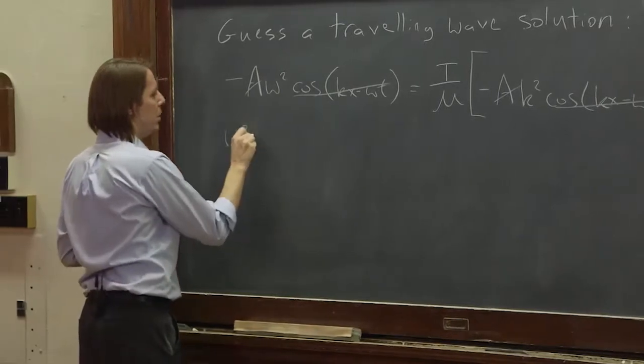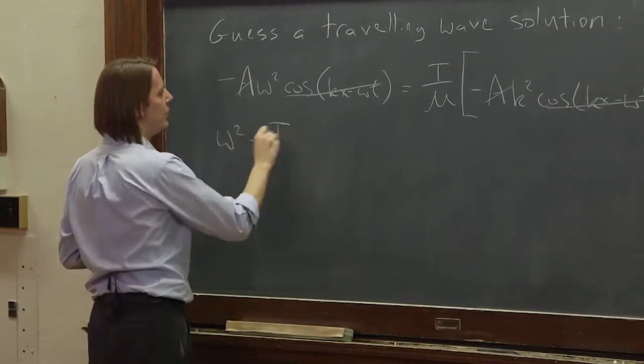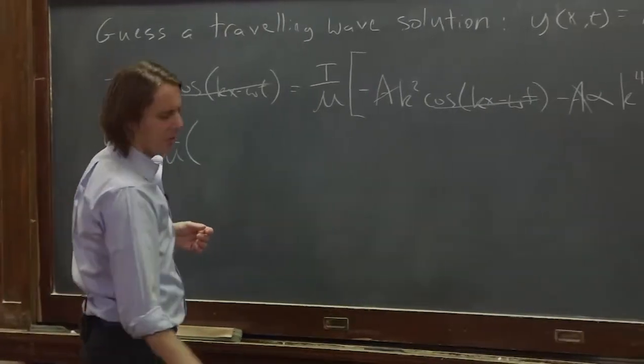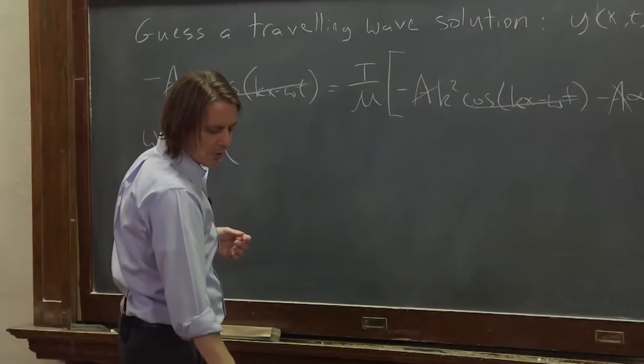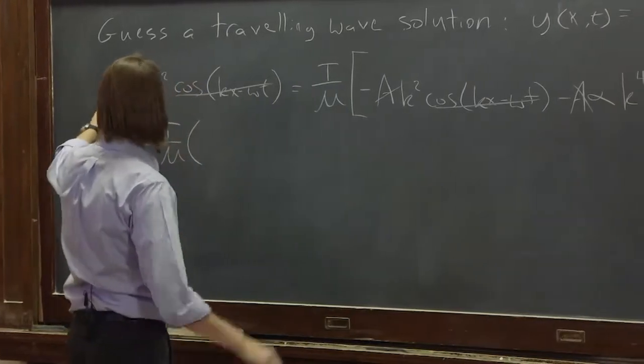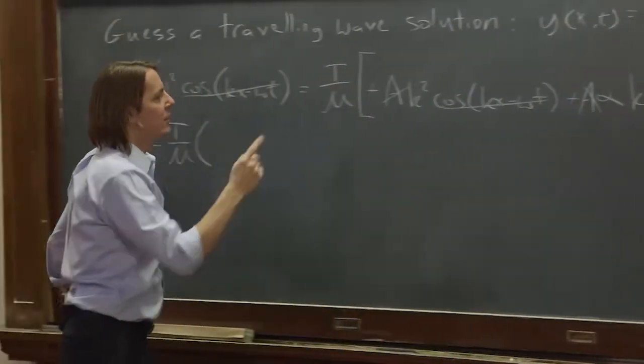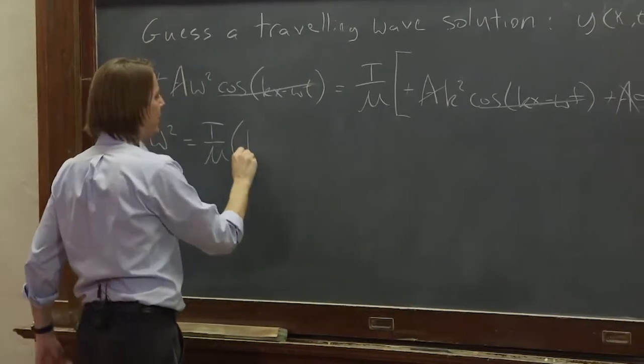that you end up with omega squared equals T over μ times what's left here. That minus, that minus, and that minus will all go away, times k squared plus alpha k to the fourth.